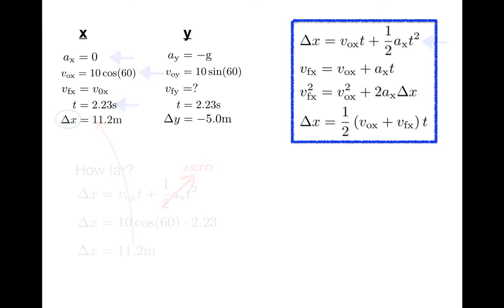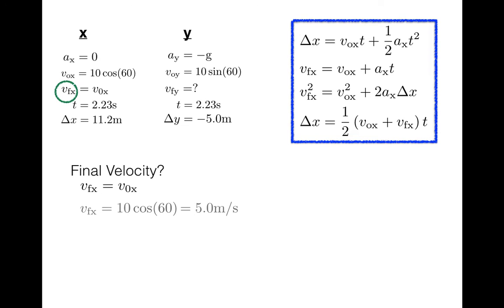Transfer that result, and now we can attack the question of what is the final velocity of this object just before it strikes the ground below. Well, how can we find the final velocity in the X direction? Remember that the final velocity in the X direction is the same as the initial velocity in the X direction, and we know that that's 10 cos(60°), or 5 m/s.